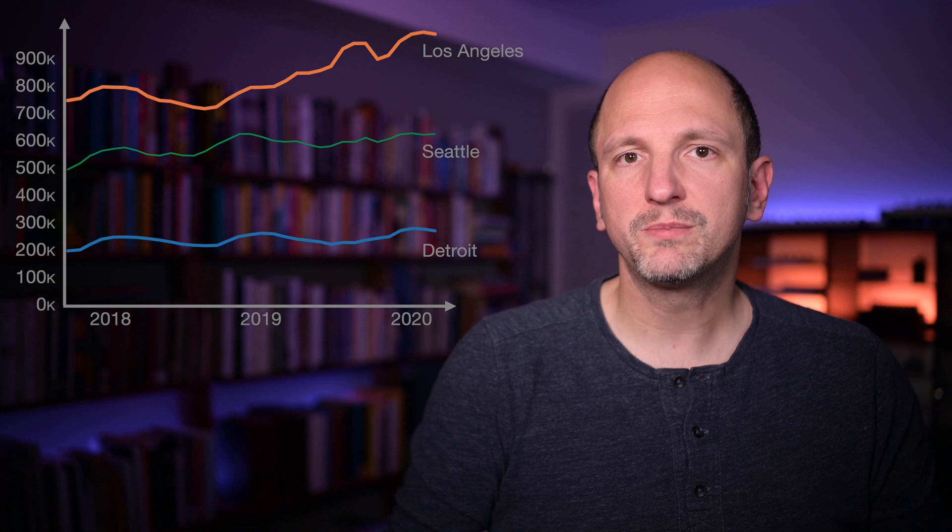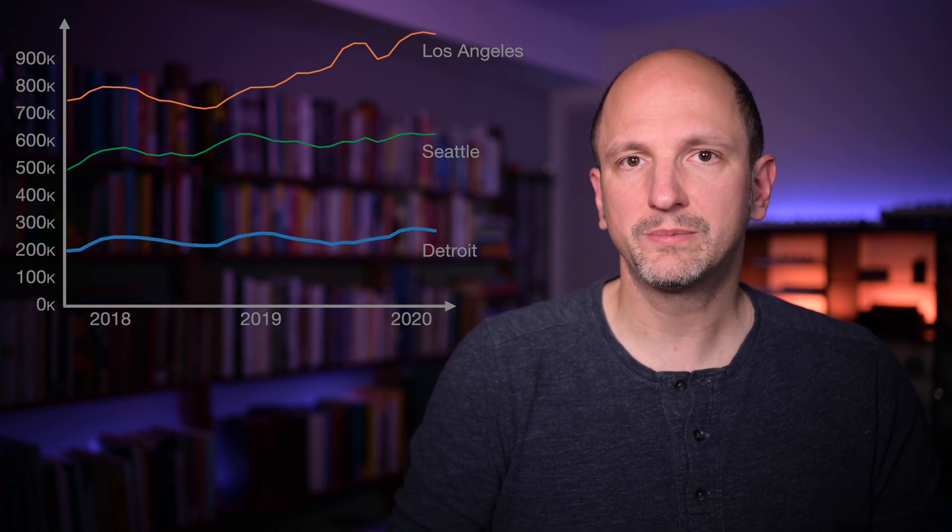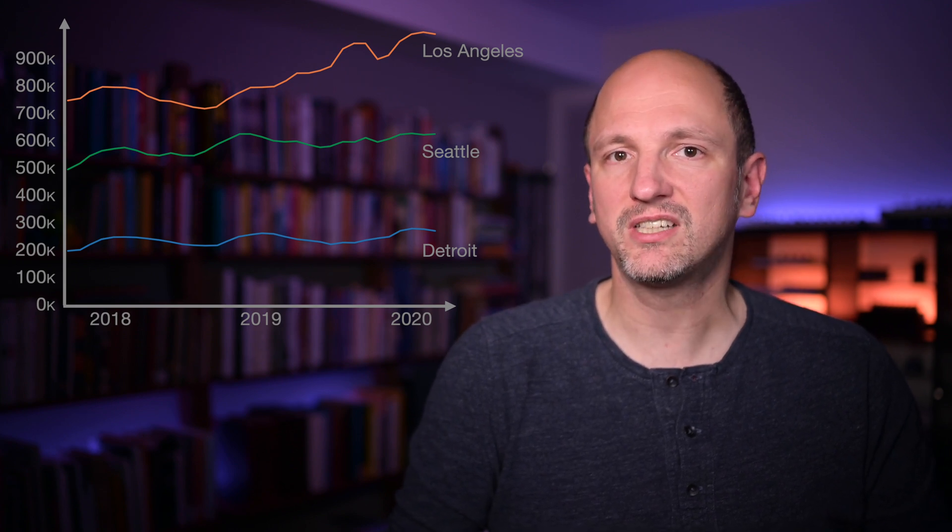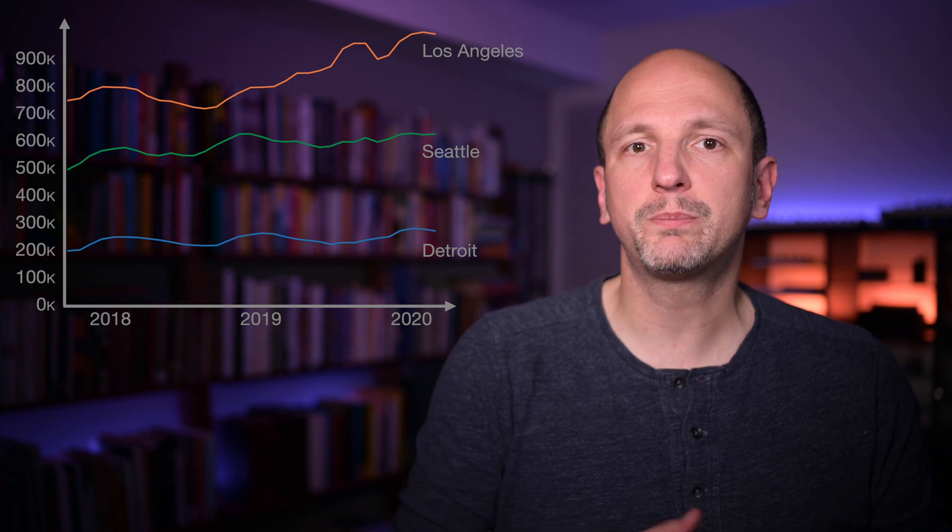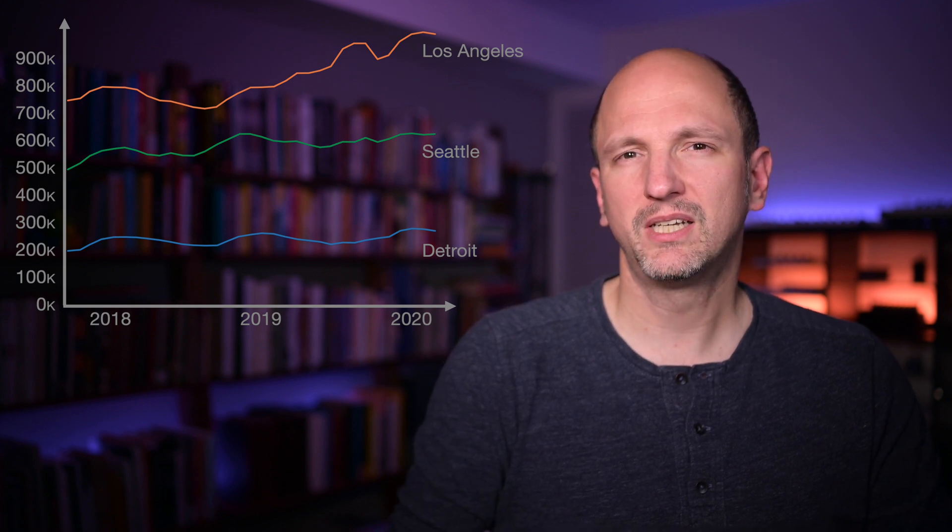LA is always more expensive than Seattle, which is always more expensive than Detroit. That's not all that surprising. But it makes it harder to see how much prices are changing over time, and how those changes compare between the different cities. Are prices going up faster in one place than the other?